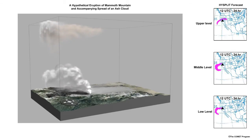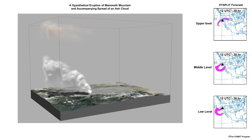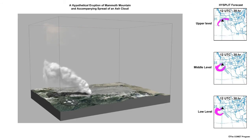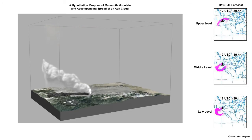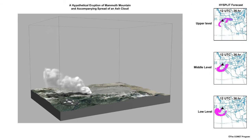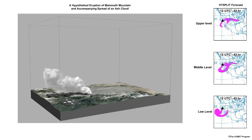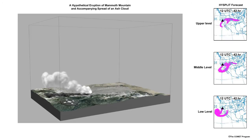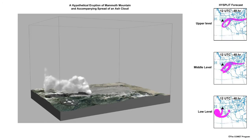It provides a forecast for the transport and dispersion of volcanic ash. This, along with urgent pilot reports and other information, is used by the Volcanic Ash Advisory Center and Meteorological Watch Office to produce volcanic ash advisories and sigmets.